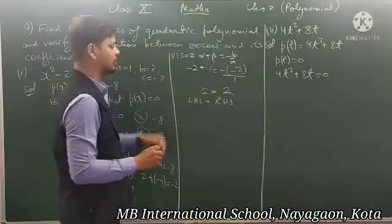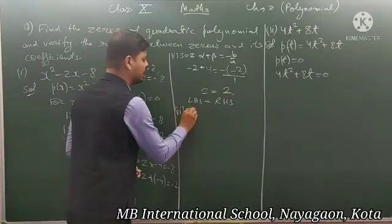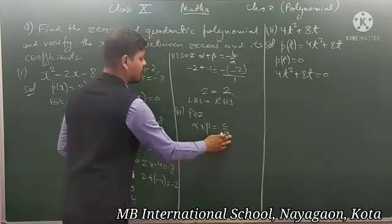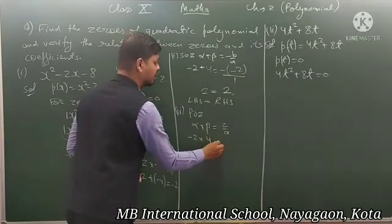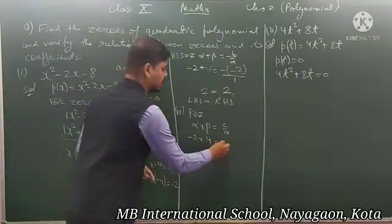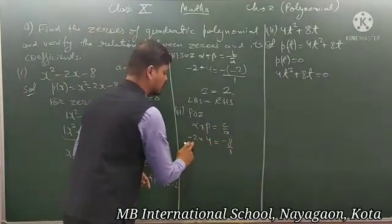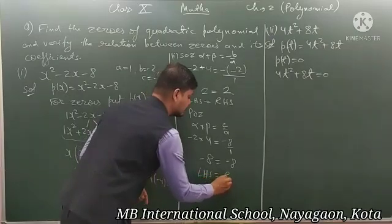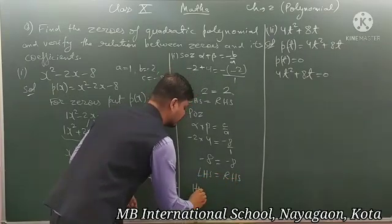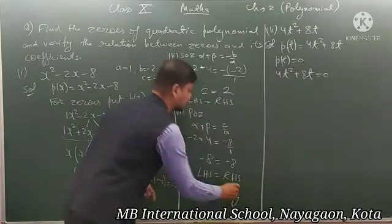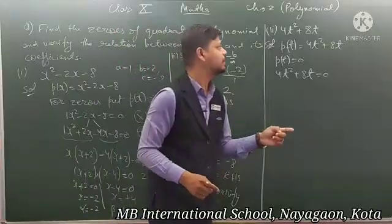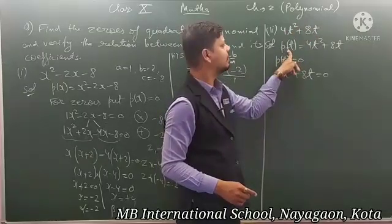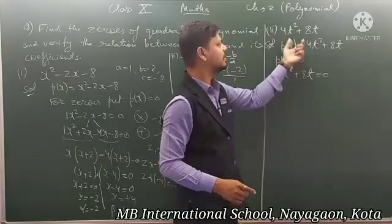Now verify the product of zeros. Product of zeros: α × β = c/a. Here α = -2, β = 4, so α × β = -2 × 4 = -8. And c/a = -8/1 = -8. So LHS equals RHS. Product of zeros relation is also verified.